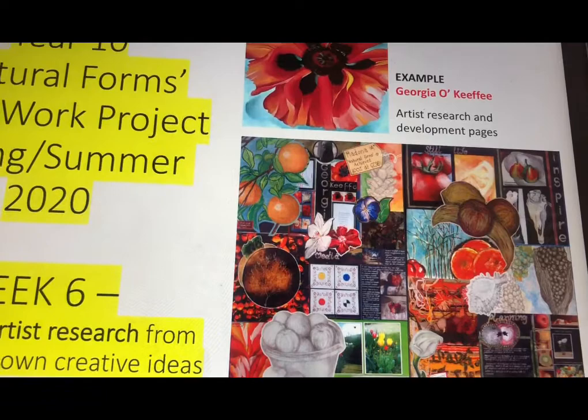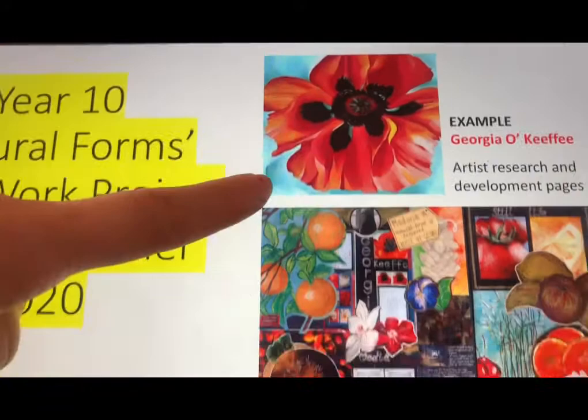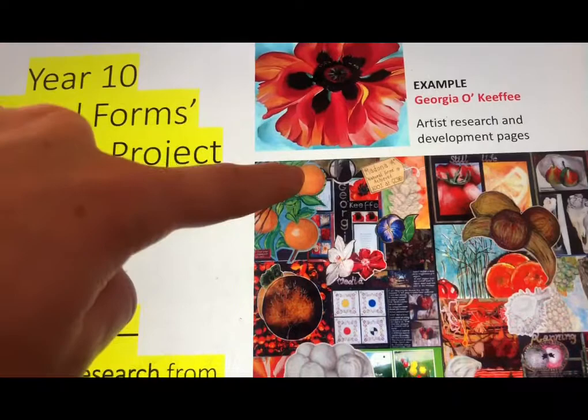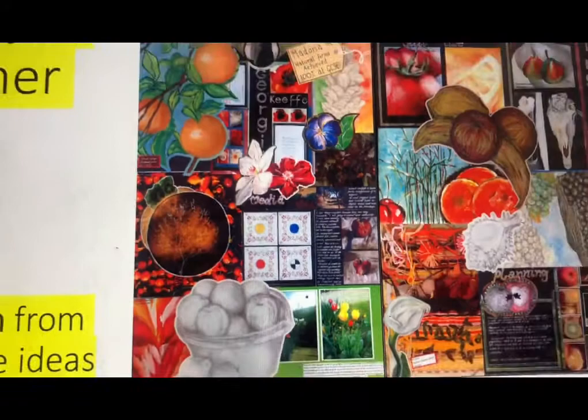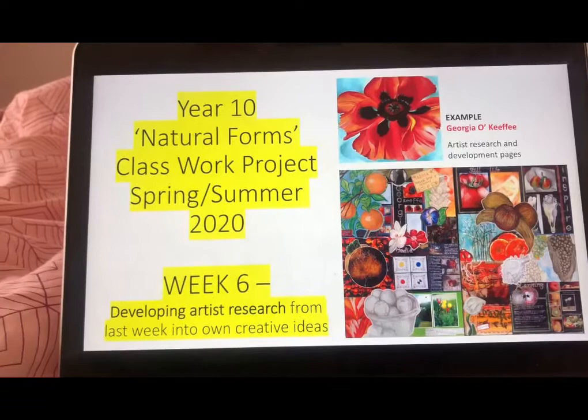As you can see, she took a painting from the artist, from Georgia O'Keeffe, and then she used her own natural form drawings mixed with Georgia O'Keeffe's kind of drawings. And she worked in lots of different mediums and materials and carried out a variety of different tests. So we're now going to move forward and look a little bit further about the things you were doing last week.